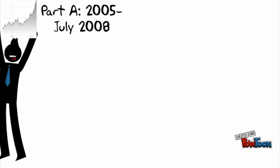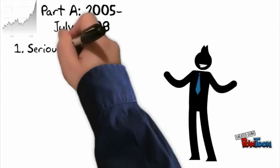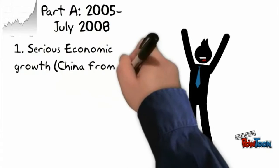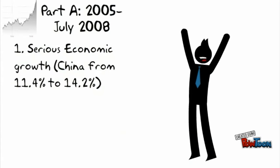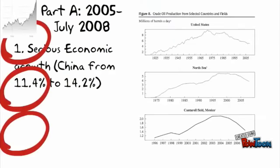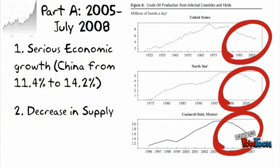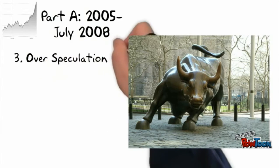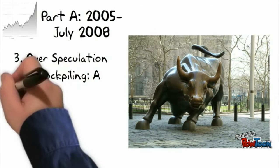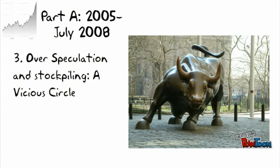Part A: The upwards trend can be explained by three factors. Firstly, the world saw serious economic growth, which meant that in our oil-dependent world economy, the demand also kept rising. Nevertheless, oil supply did not increase to meet demand, and in some places it actually fell, such as in the North Sea, the USA, and in Mexico. Thirdly, because prices kept rising, a bull market emerged, as speculators started to buy oil now for stockpiling and to sell later when prices were higher.